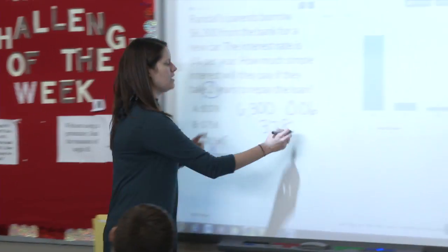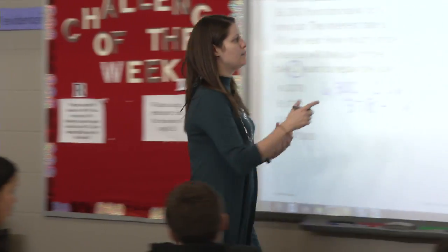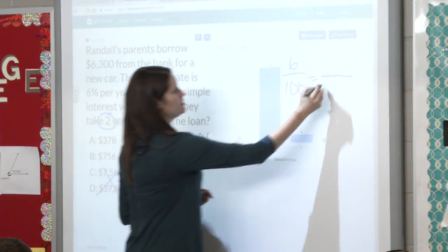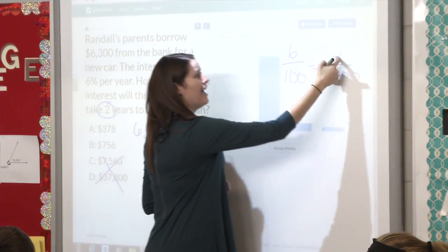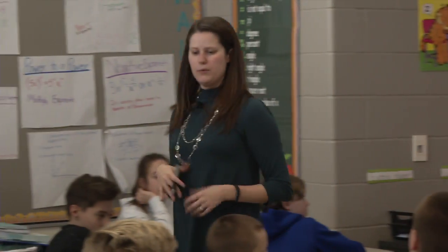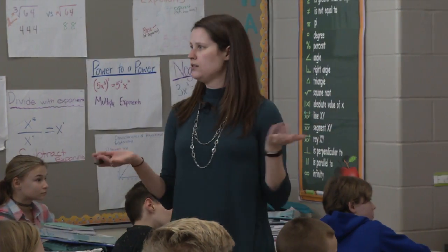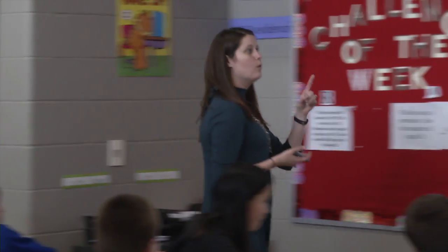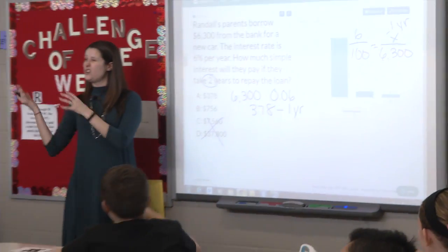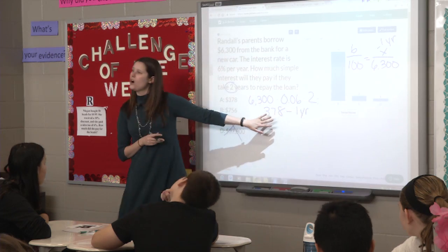This is what we talked about yesterday when you were looking at your cars, because a lot of you were calculating it and trying to set it up like we did before — putting 6 out of 100 and then the 6,300. When you got your answer and told me what you got, I asked what it represents, and you said five years. But if we're talking about two years, did I ever use two? No — so that's just representing one year. That's why we changed the formula around so we don't forget our years.